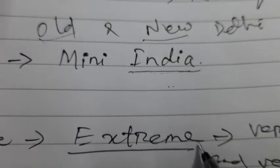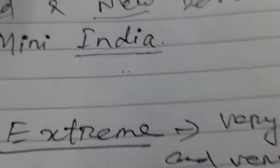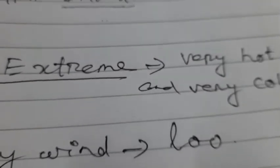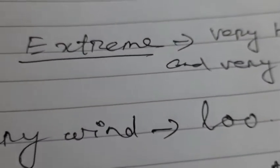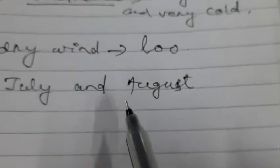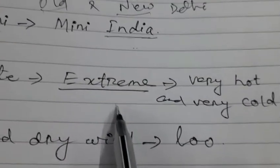Now we will discuss about the climate of Delhi. The climate is extreme — very hot during summer and very cold in winters. A hot and dry wind called loo also blows in summers. Delhi receives heavy rain during the months of July and August.